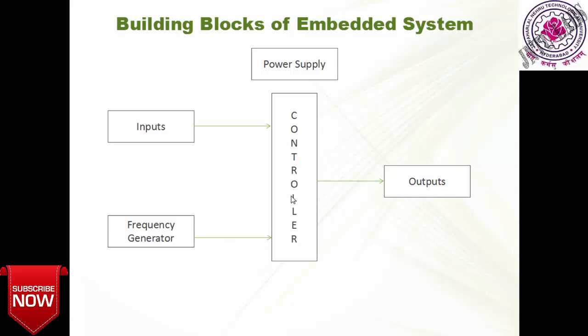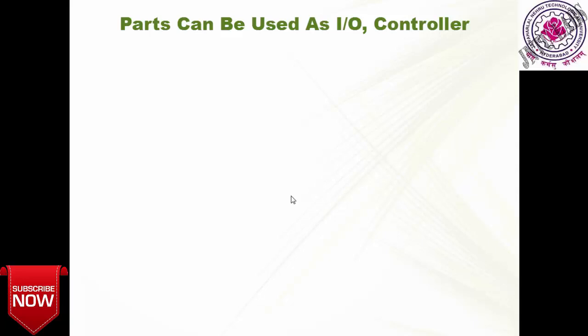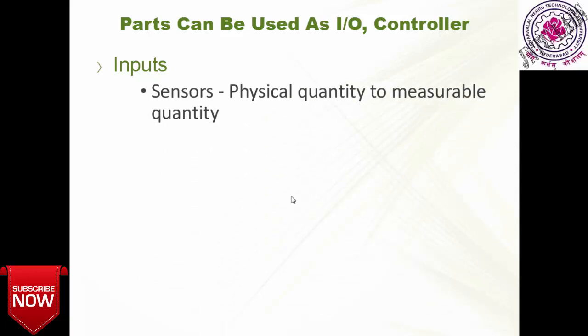So the basic building blocks of any embedded system are: power supply, inputs, controller, outputs, and a frequency generator. Now, what parts can be used as input or output? For inputs, we have sensors. A sensor senses surrounding activities and gives a value to the controller — in technical terms, a sensor converts a physical quantity to a measurable quantity.